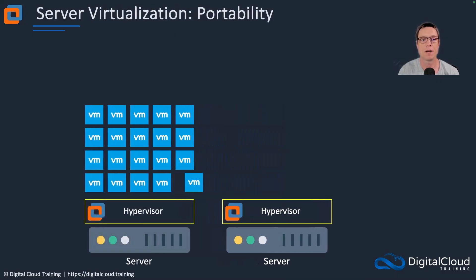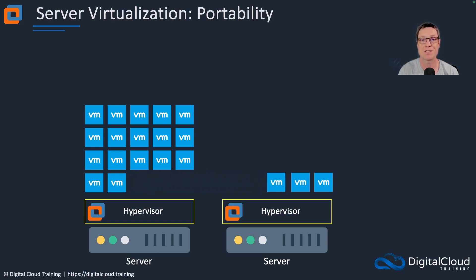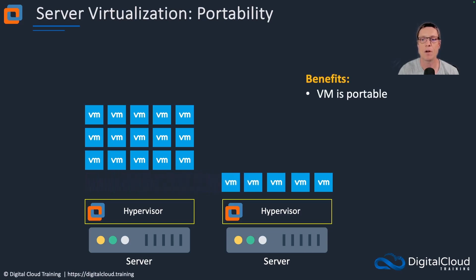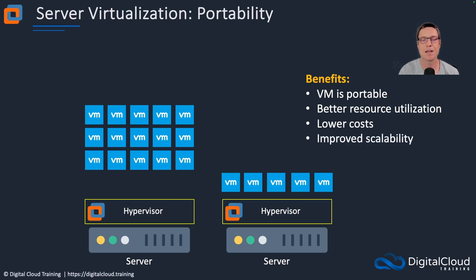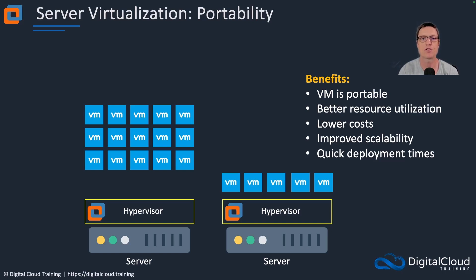We also have portability. These virtual machines can be easily moved between servers because they're not tied to the underlying hardware the way they are without virtualization. The virtual machine is portable, we get better resource utilization, and that drives lower costs. We have great scalability — we can add additional hypervisor servers and move virtual machines around to provide capacity as needed. And we have very quick deployment times: as long as your underlying hardware infrastructure has the capacity, you can deploy servers very, very quickly.